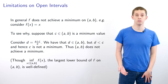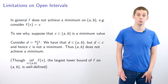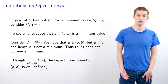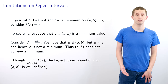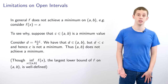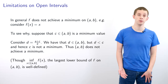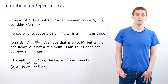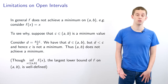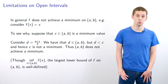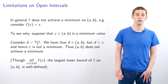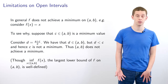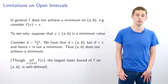If we look at open intervals, this result is no longer always true. For example, let's look at the function f(x) = x on the open interval from a to b. This function does not have a well-defined minimum in this interval. Suppose we consider a candidate minimum c; then if we look at the value (a + c)/2, we can find that that value will be smaller than c, and therefore c is not a minimum and we obtain a contradiction. So that tells us that we cannot define a minimum.